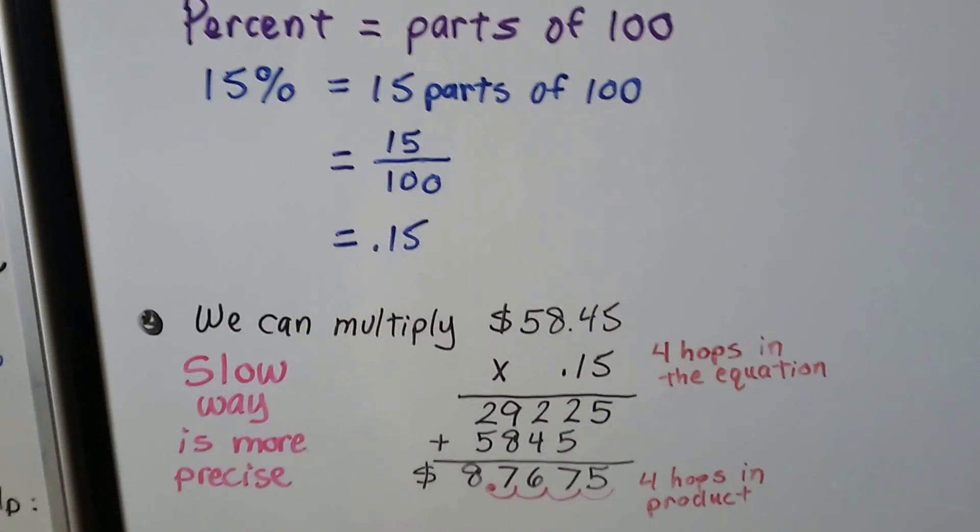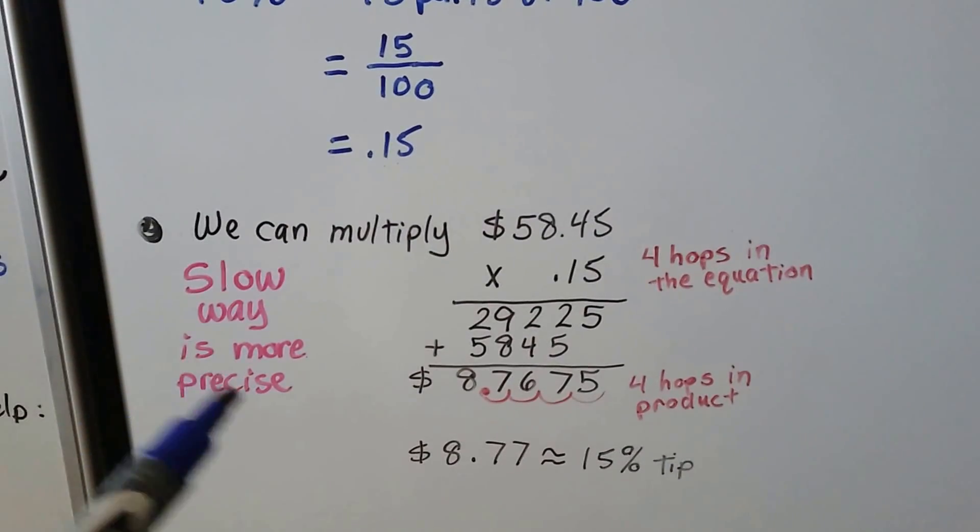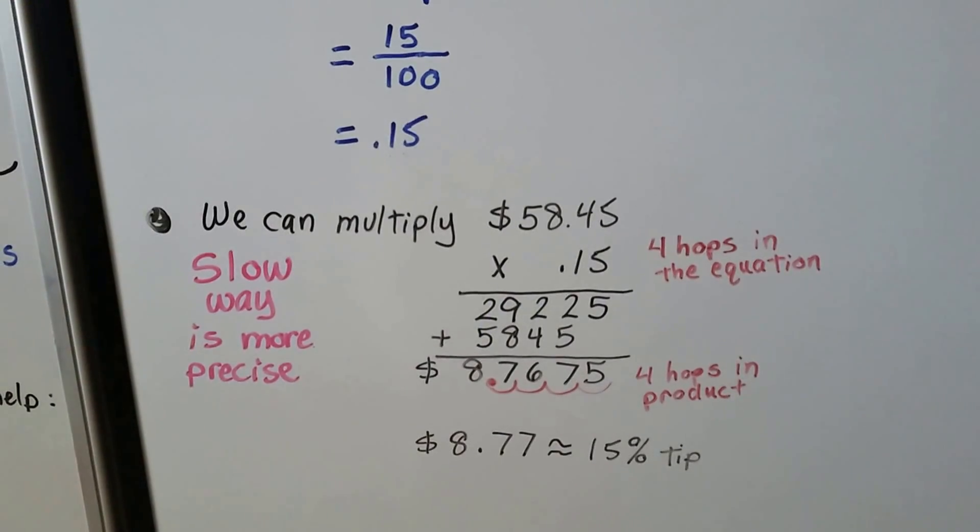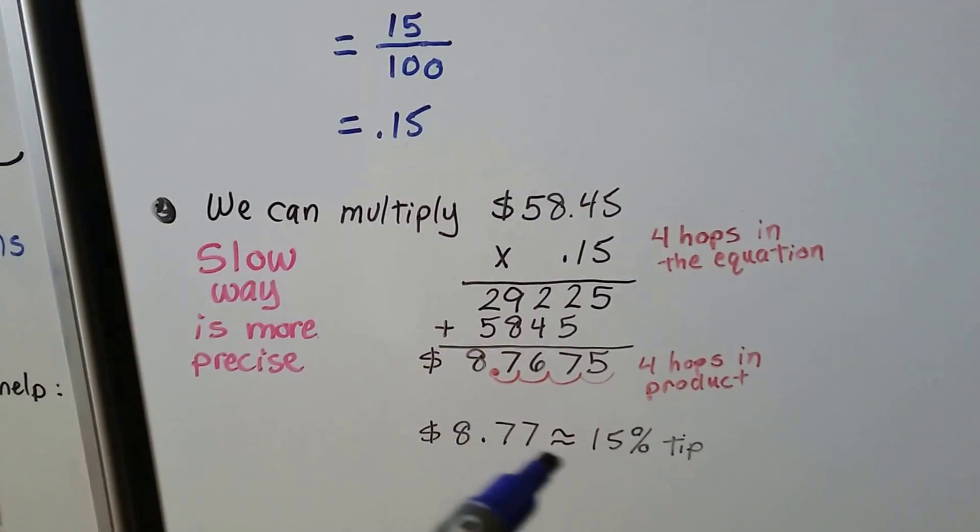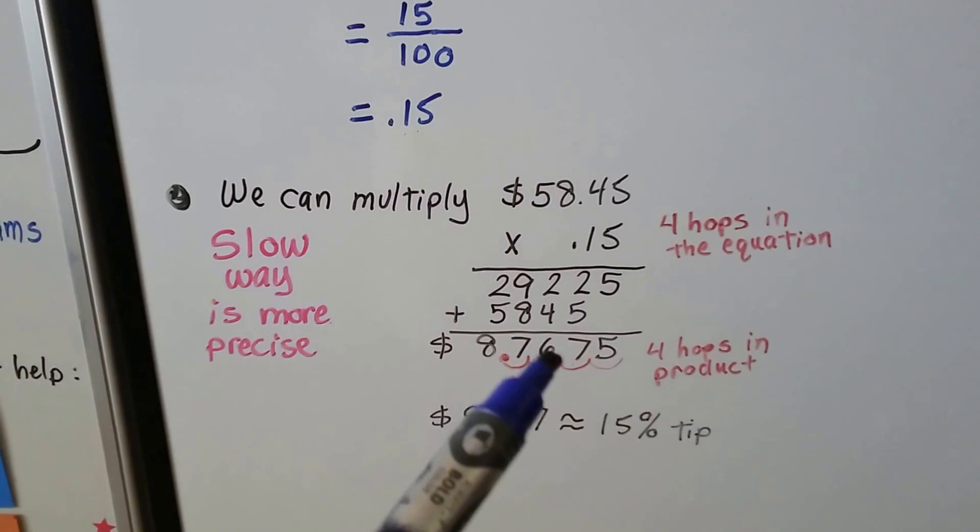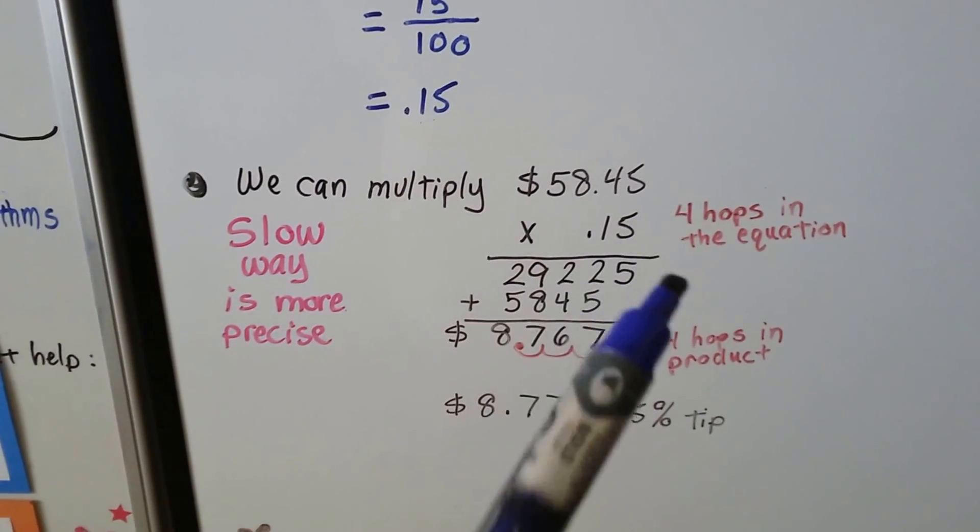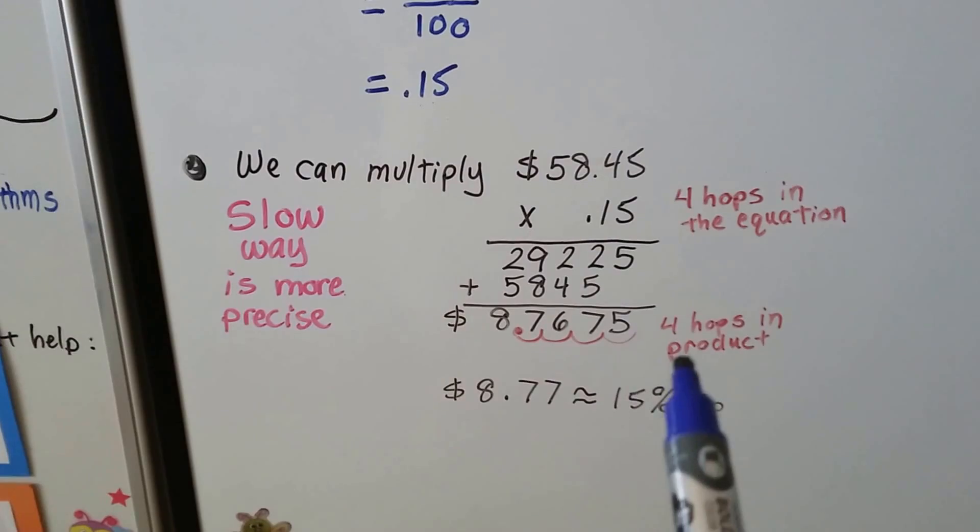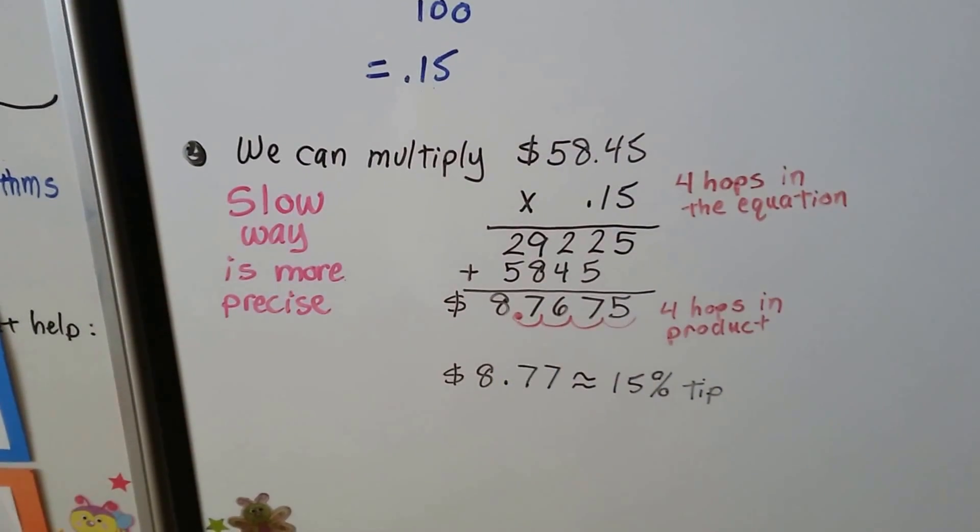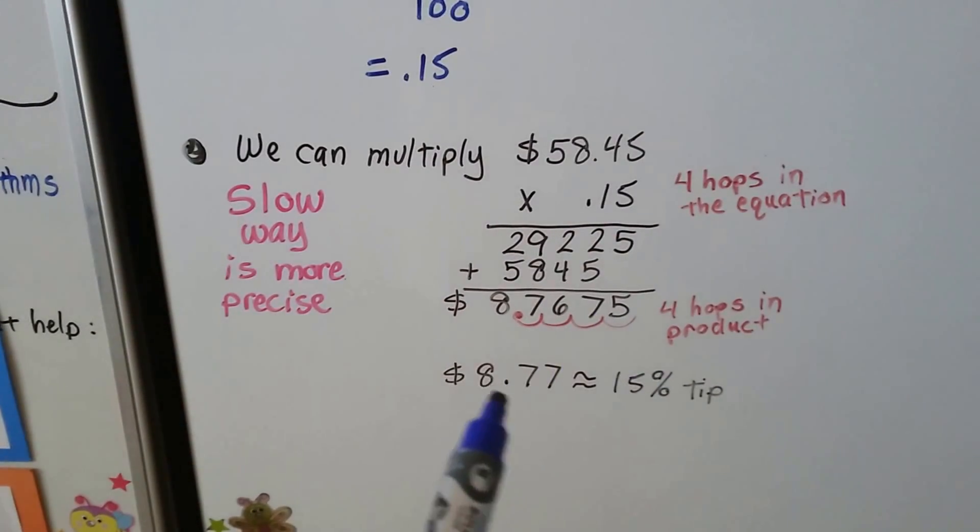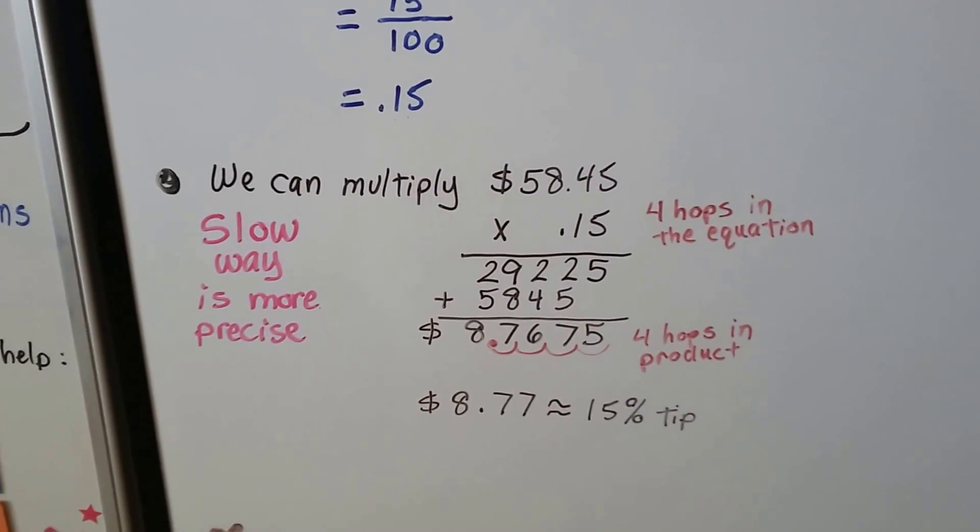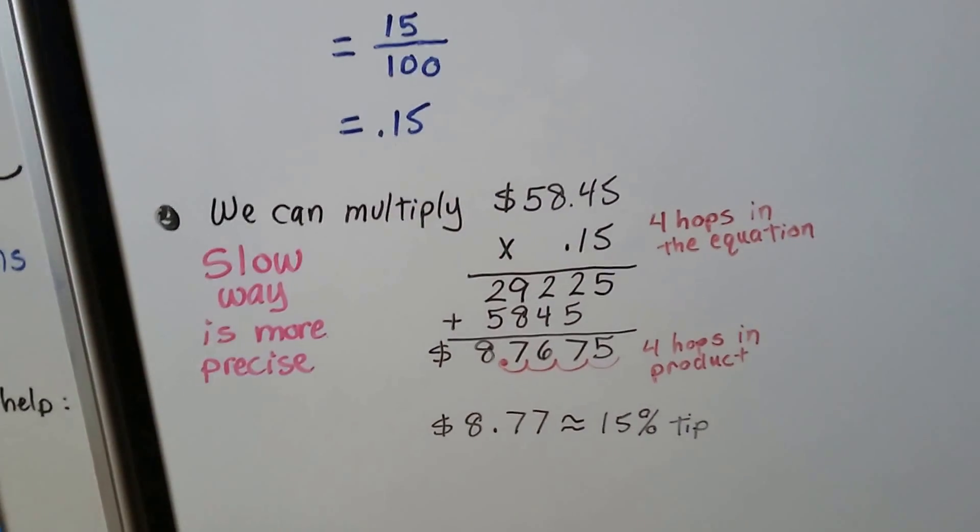Now, this is the slow, more precise way. We multiply the $58.45 times .15. We do our multiplication, and we add, and we get 8, 7, 6, 7, 5. There's four decimal hops in the equation. 1, 2, 3, 4. So, we're going to put four hops into the product. So, we can round this to $8.77 for approximately a 15% tip. Now, that's the slow, precise way.